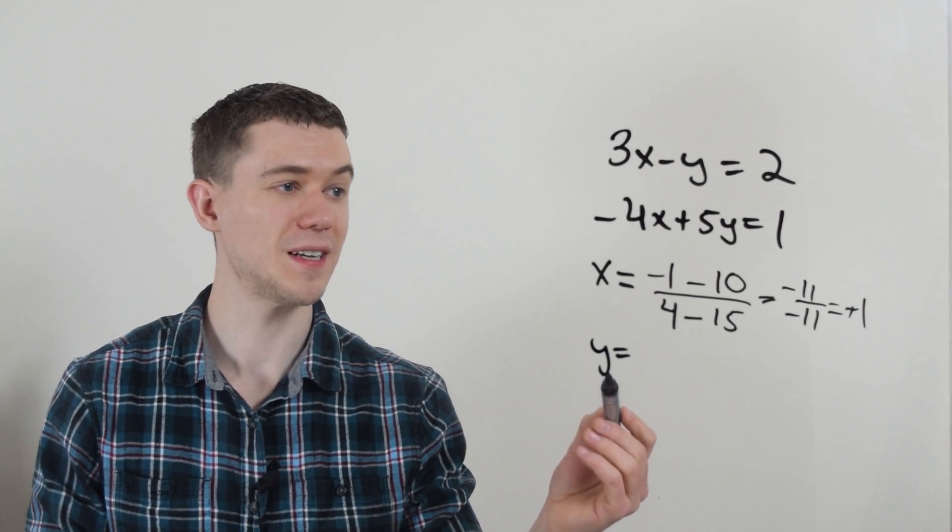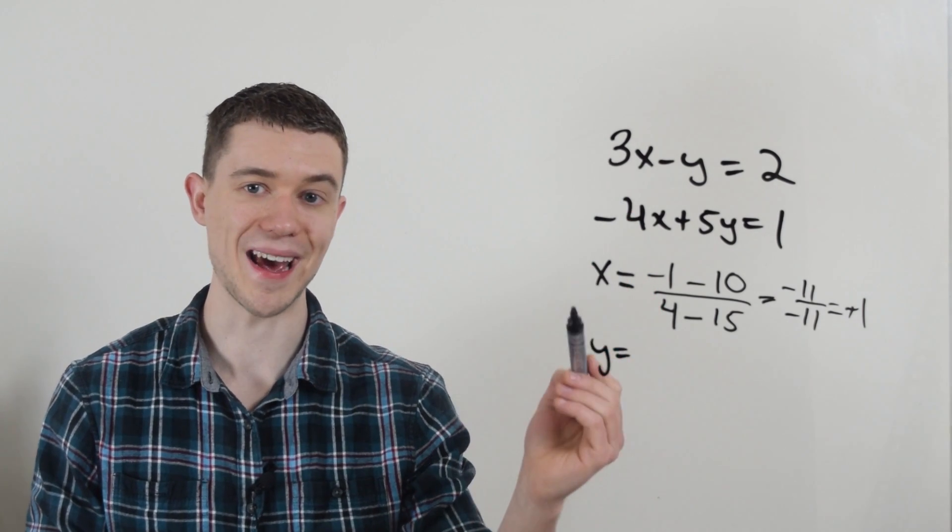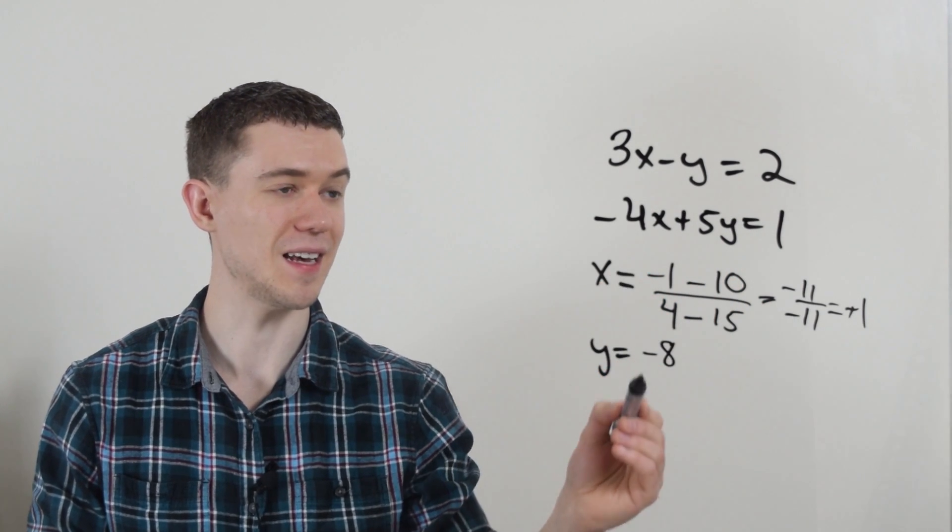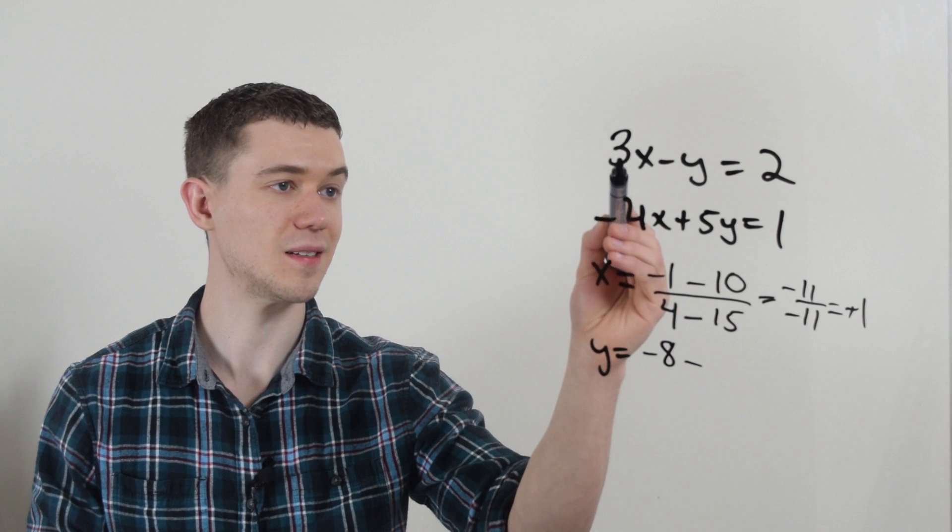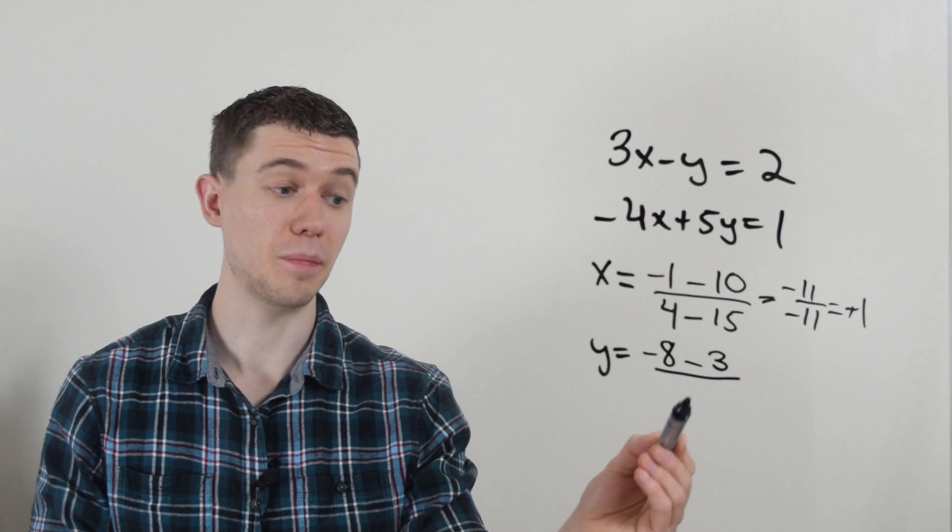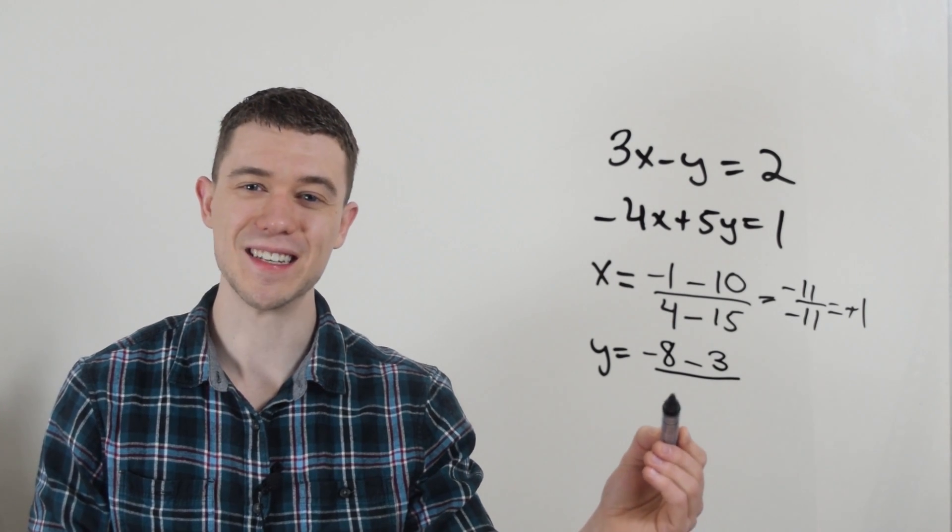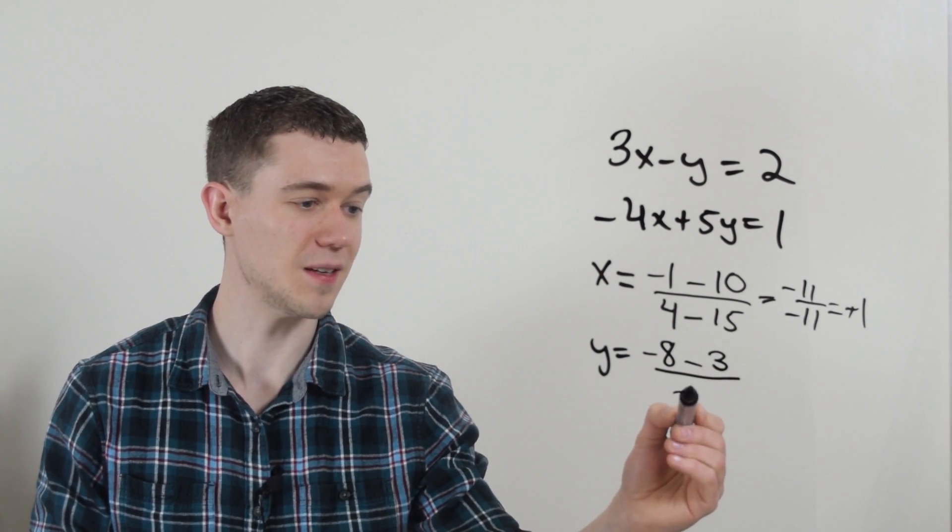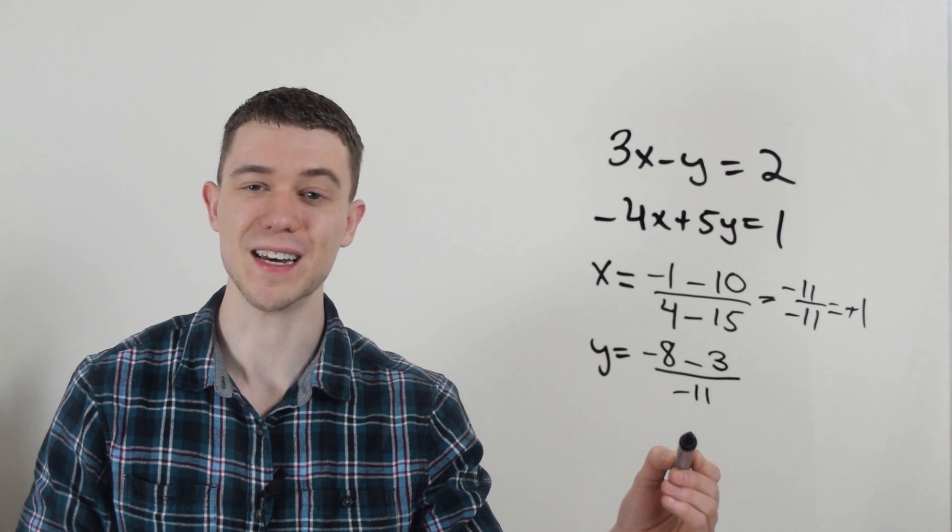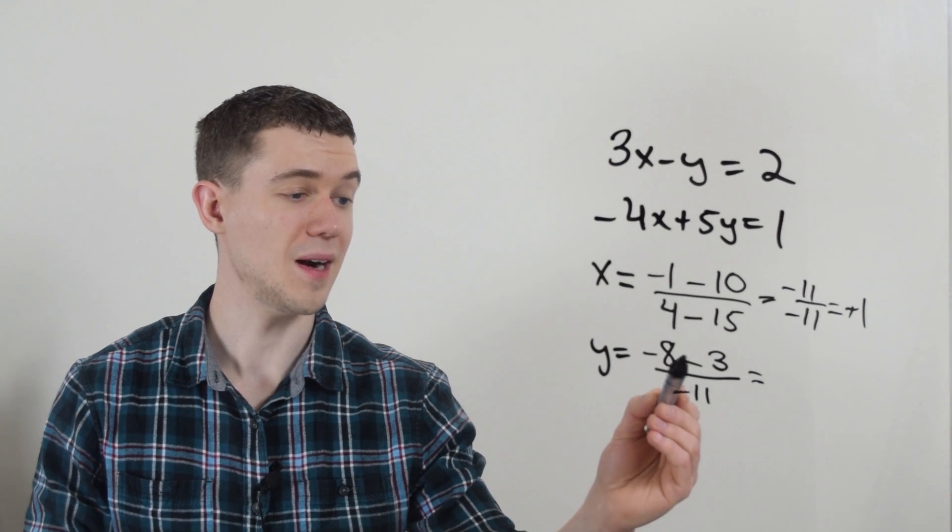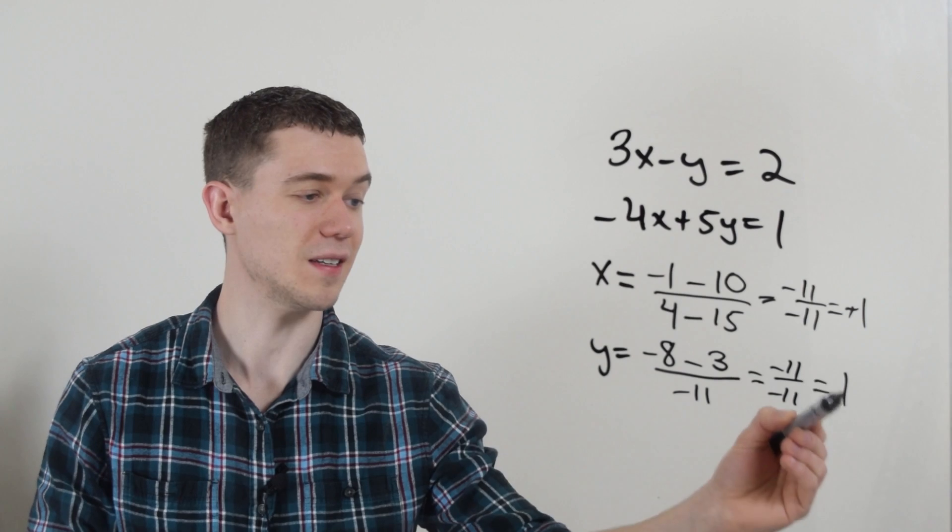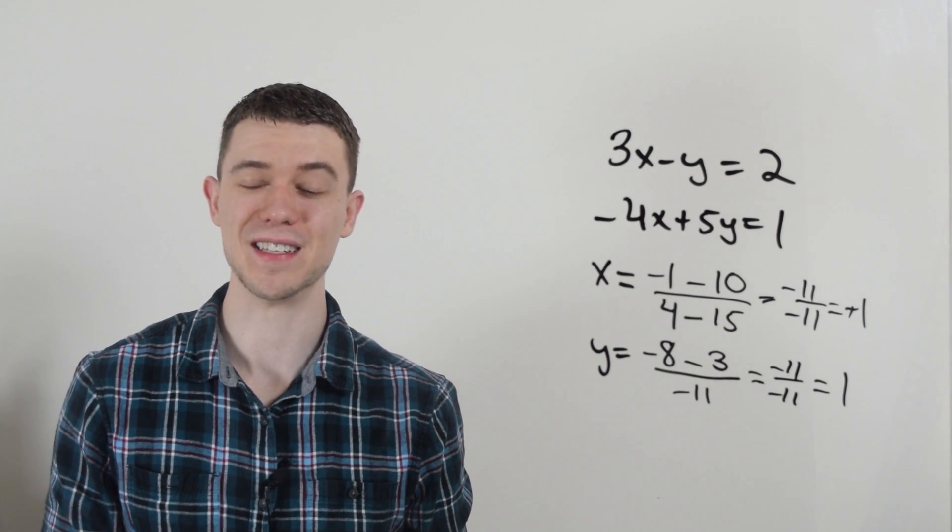How do you do it with y? Remember, this time we take the coefficients of the x. I do 2 times minus 4 is minus 8. Minus 1 times 3 is 3. All over. And remember, the bottom, the denominator, it's just the same from the last time. So you can just keep this, keep the denominator the same. Don't even worry about computing that the second time. Minus 8 minus 3 again is minus 11. Over minus 11, that's again 1. So x is 1 and y is 1 in this equation.